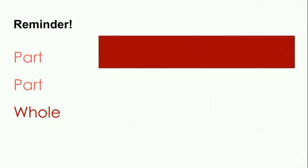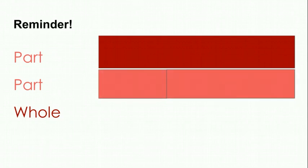As you can see, the dark red is my whole. The two parts should be the exact same size as your whole in a tape diagram. So if my whole is ten, the two parts that make up ten are eight and two. You can solve for that two by saying ten minus eight equals something, or something plus eight equals ten. We're going to see this work with bigger numbers in our new learning.